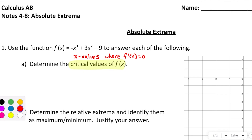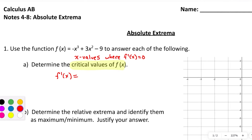We can find these critical values pretty easily — we just need to find the derivative. There's nothing fancy going on with f: no chain rule, no product rule, no transcendentals, just regular old power rule. So f prime is negative 3x squared plus 6x.